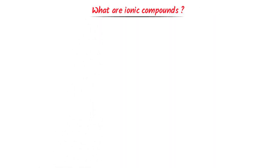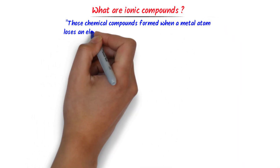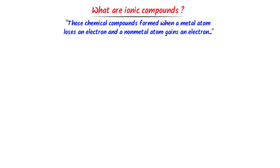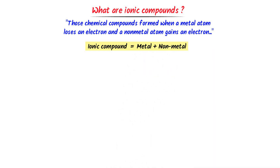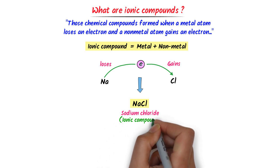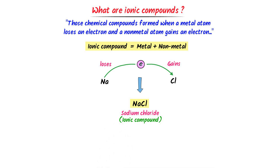Now, what are ionic compounds? Those chemical compounds formed when a metal atom loses an electron and a non-metal atom gains an electron are called ionic compounds. Remember that an ionic bond is always formed between metals and non-metals. For example, sodium is a metal and chlorine is a non-metal. Sodium loses an electron while chlorine gains it, forming sodium chloride — an ionic compound. Ionic compounds are formed between metals and non-metals by complete transfer of electrons.